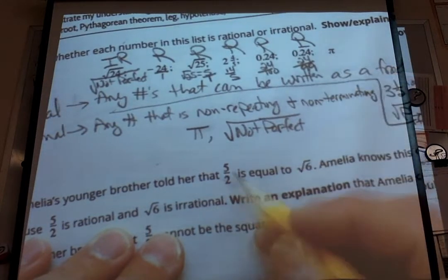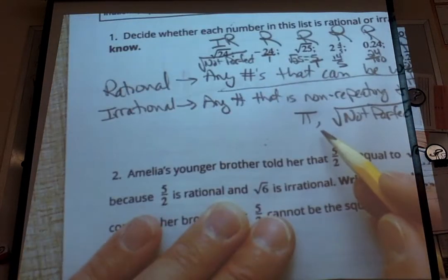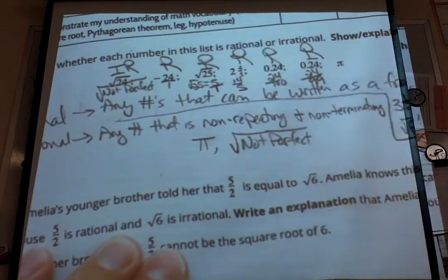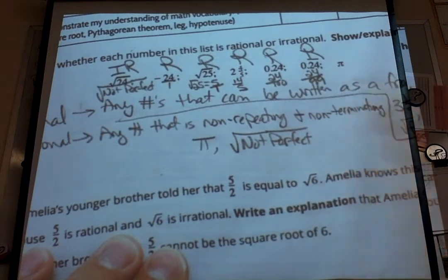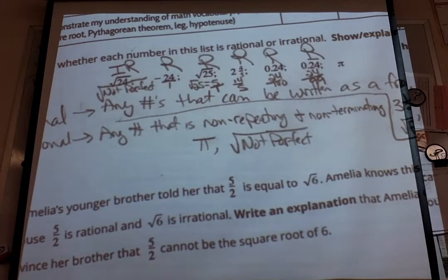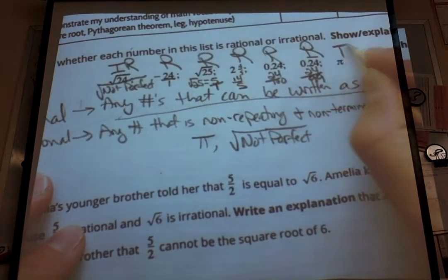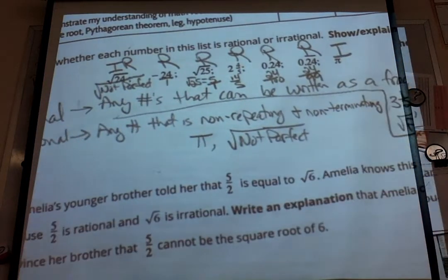And pi — as we gave in our example for irrational — if you put pi into your calculator, you're going to get 3.14 and then more numbers. There's no rhyme or reason to the numbers beyond that; there's no pattern that exists. So pi is considered irrational.